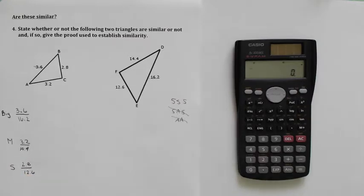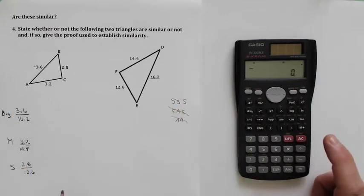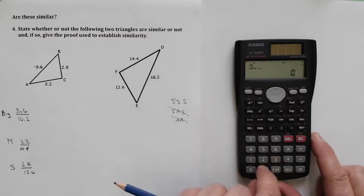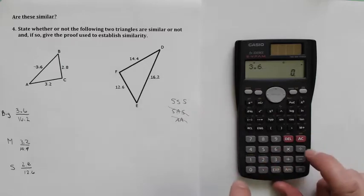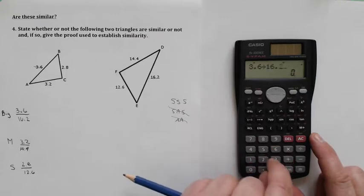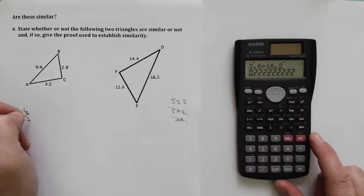So we're trying the only proof we can, because we don't have angles, to see if these proportions are the same. So we'll just do our calculations now. 3.6 divided by 16.2 gives me a scale factor of 0.2 repeating.